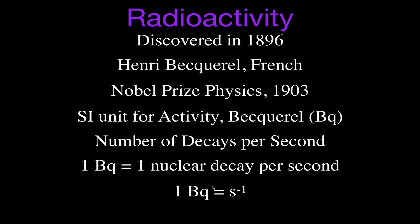You can also write it like that. One Becquerel is equal to S to the minus one. S to the minus one means one over S. So that's the decays per second, kind of like frequency and hertz, which is cycles per second.